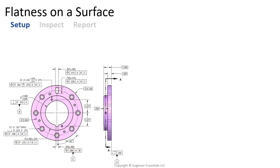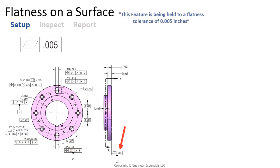In this example, flatness is qualifying datum feature A. We see flatness on its own for this feature because that surface is the primary datum — we don't need to define its location or orientation because everything else is located and oriented to it. This feature control frame is telling us that this feature is being held to a flatness tolerance of five thousandths of an inch.